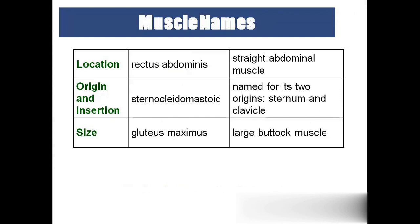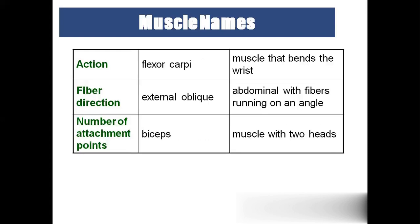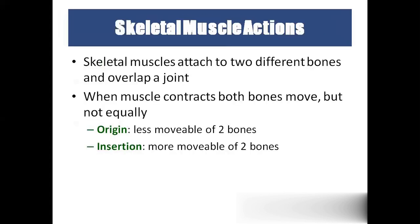Some of the named muscles: rectus abdominis, present in the abdominal region for creating the abs. Sternocleidomastoid, present in the neck region, has two origins — sternum and clavicle. Gluteus maximus — the largest buttock muscle — is the largest muscle in our body. Flexor carpi actually bends the wrist. External oblique muscles are present in the abdominal region. Biceps means having two heads.